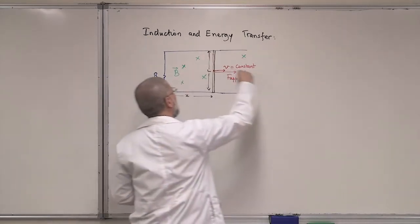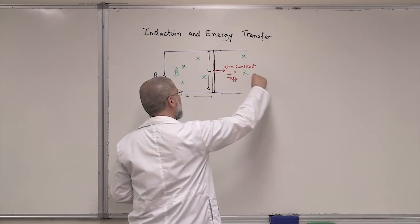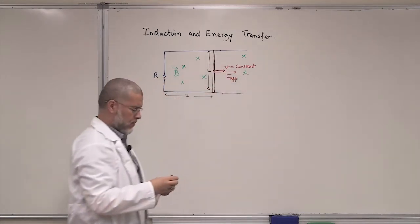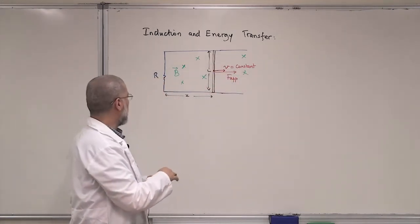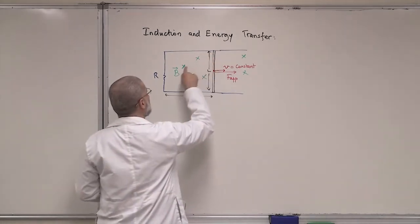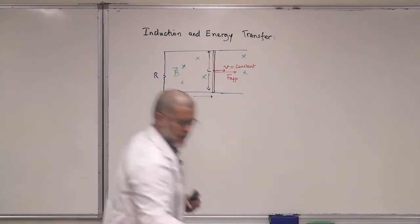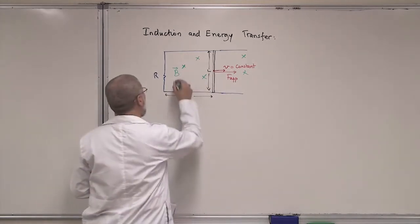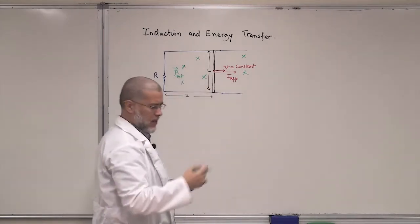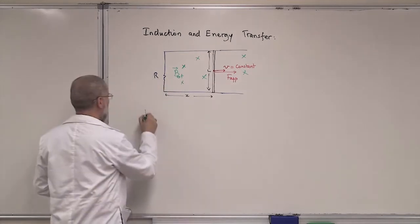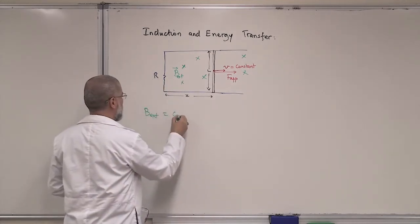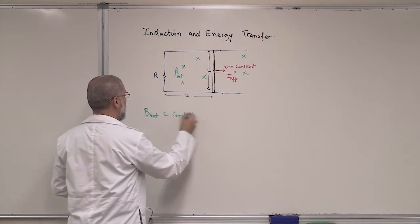So we are moving. As we apply the force, this rod is going to move at constant speed — we will see why. Now, remember that there is an external magnetic field. I'll write 'external' to make it clear. It can be produced by a bar magnet, but B external is constant — it's not changing at all.